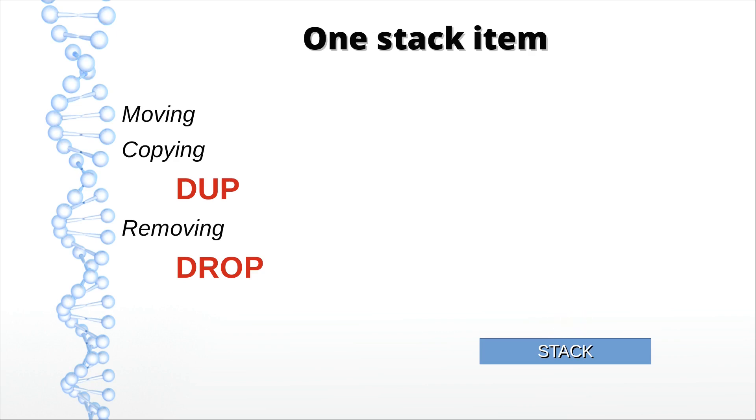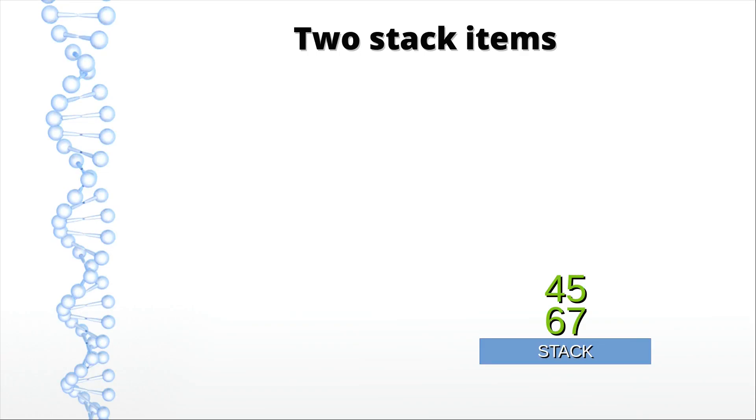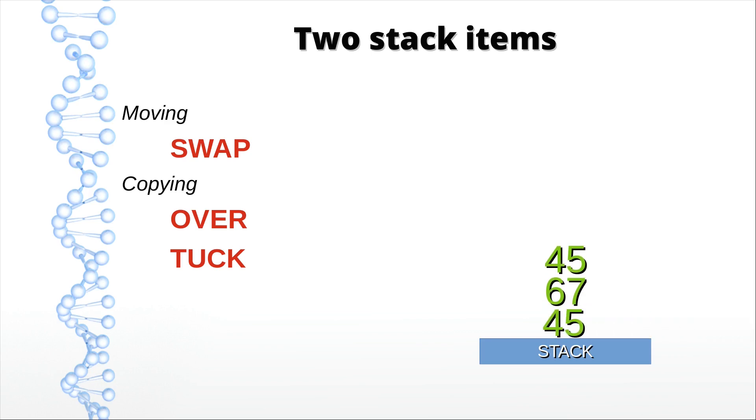Now let's see what we got with two items. You can switch the position of the two items by calling Swap. Over copies the second item on the stack to the top of the stack. Tuck does the inverse. It copies the top of the stack below the second item on the stack. And finally, Nip removes the second item on the stack.